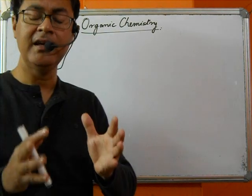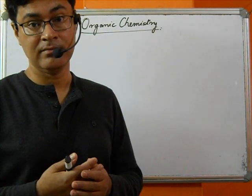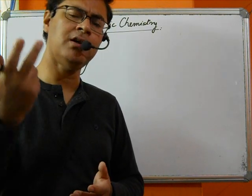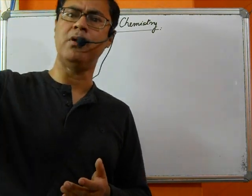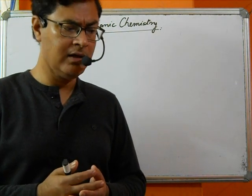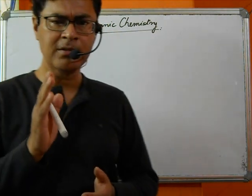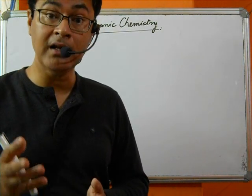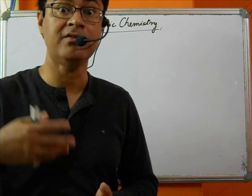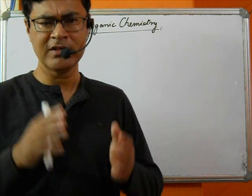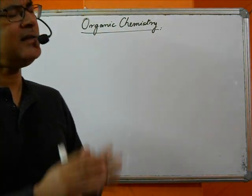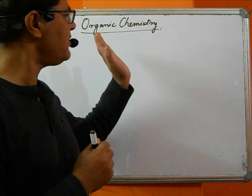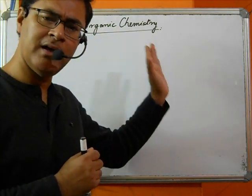Organic chemistry is a special branch of chemistry which deals specifically with carbon and its compounds. The question is: what is so unique about carbon that a special branch of chemistry had to be declared? There are approximately four to five million carbon compounds, and thousands more are discovered every year.